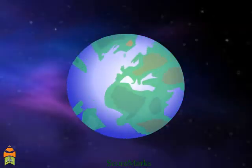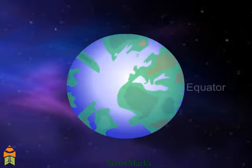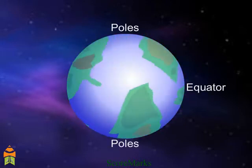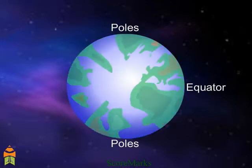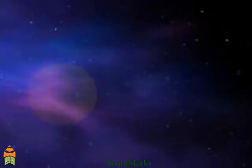Wind currents are caused due to the uneven heating between the equator and poles and the uneven heating of land and water. The regions close to the equator get the maximum heat from the sun.